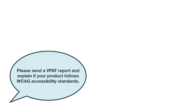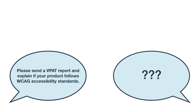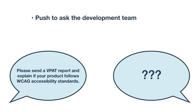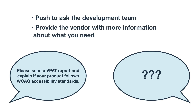Also, when you ask the vendor for a VPAT and WCAG accessibility standards, they might not know what you mean, especially the salesperson you're communicating with. This doesn't mean you should end conversations with the vendor, but it could mean pushing to ask the development team or providing them with more information about what you need. If you're still getting vague responses, it might be a sign they haven't made much accessibility effort or aren't willing to.